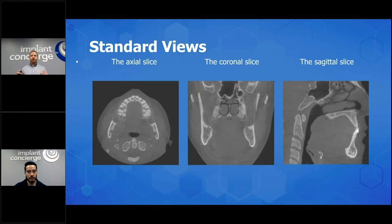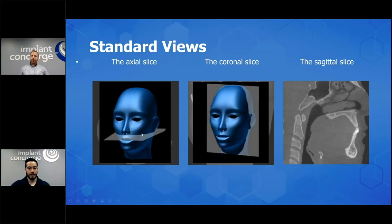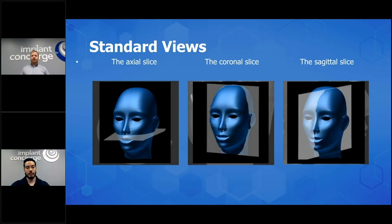To get everybody on the same page — some people might have a lot of knowledge on cone beam CT, others might not. But you have the three main views, plus a few others like your reconstructed panoramic and your 3D views. Your axial is going to be parallel to the floor. Coronal is going to be parallel to the front of the patient's face — great for looking at the nasal cavity, the maxillary and paranasal sinuses. The final one being sagittal, going from left to right, and the center line of course is what's called your mid-sagittal line.